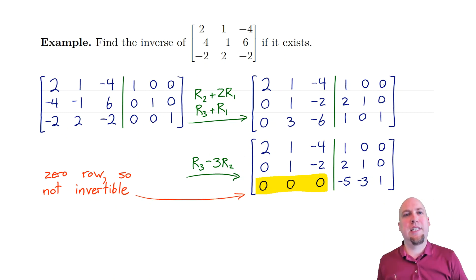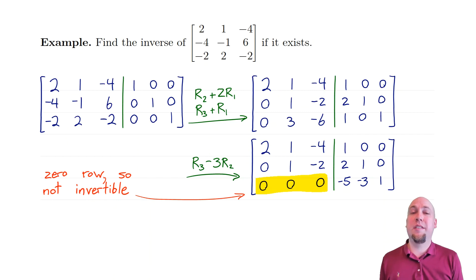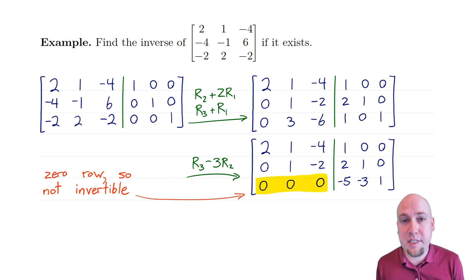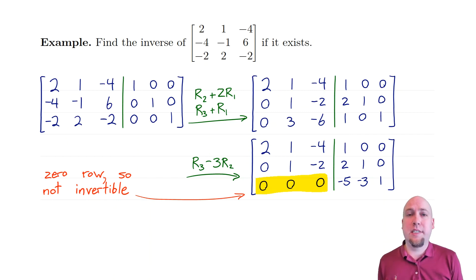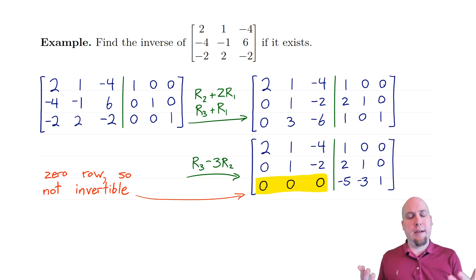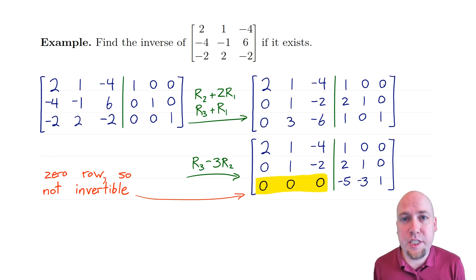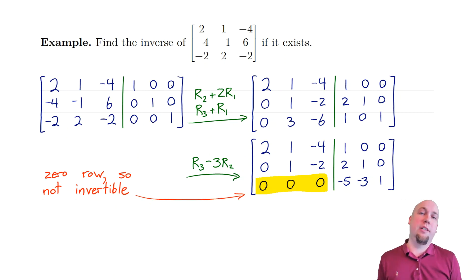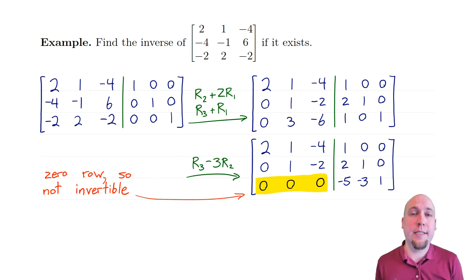That's enough for today. Next class we're going to introduce a couple of final theorems about invertibility of matrices, to pin down some technical details we've glossed over. We'll also come up with an explicit formula for the inverse of a two-by-two matrix, so you don't have to use this Gaussian elimination method for the two-by-two case. I'll see you next class.